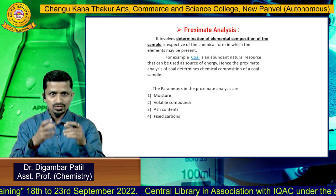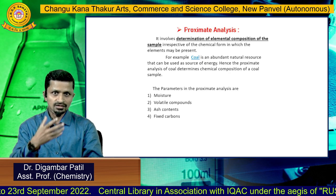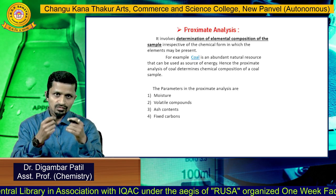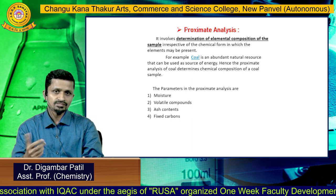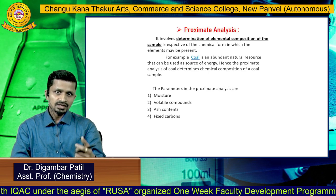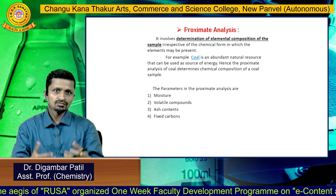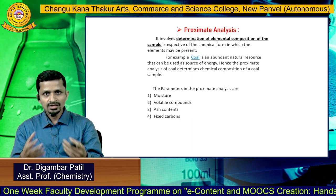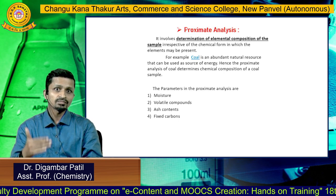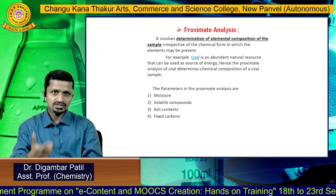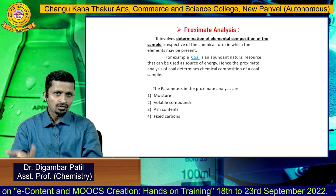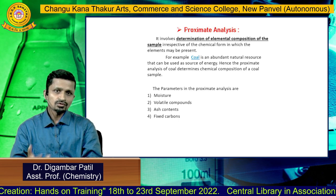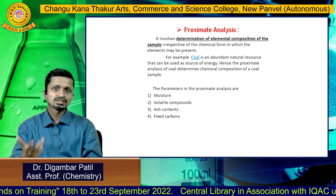In proximate analysis, various parameters are studied. First is moisture — how much moisture is present in the sample. Second is volatile compounds — whether any volatile compounds are present. Third is ash content, which relates to the presence of impurities such as metals and non-metals like silicon. Fourth is fixed carbon — the amount of carbon that remains unburned in the sample.